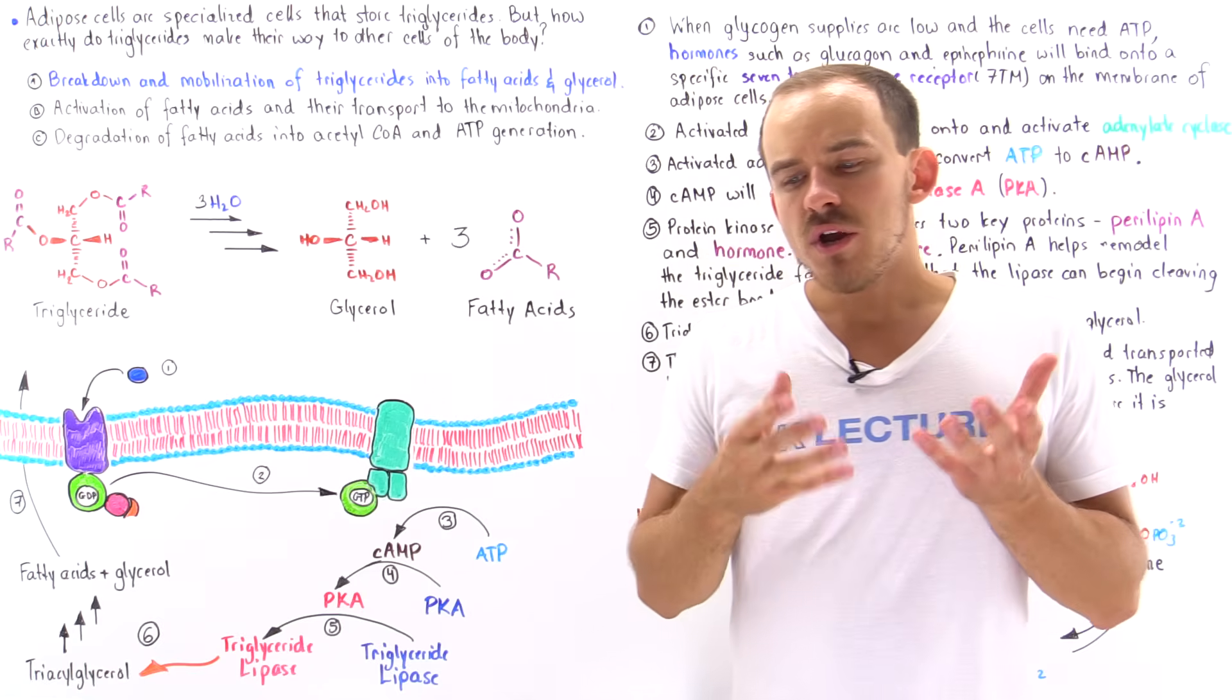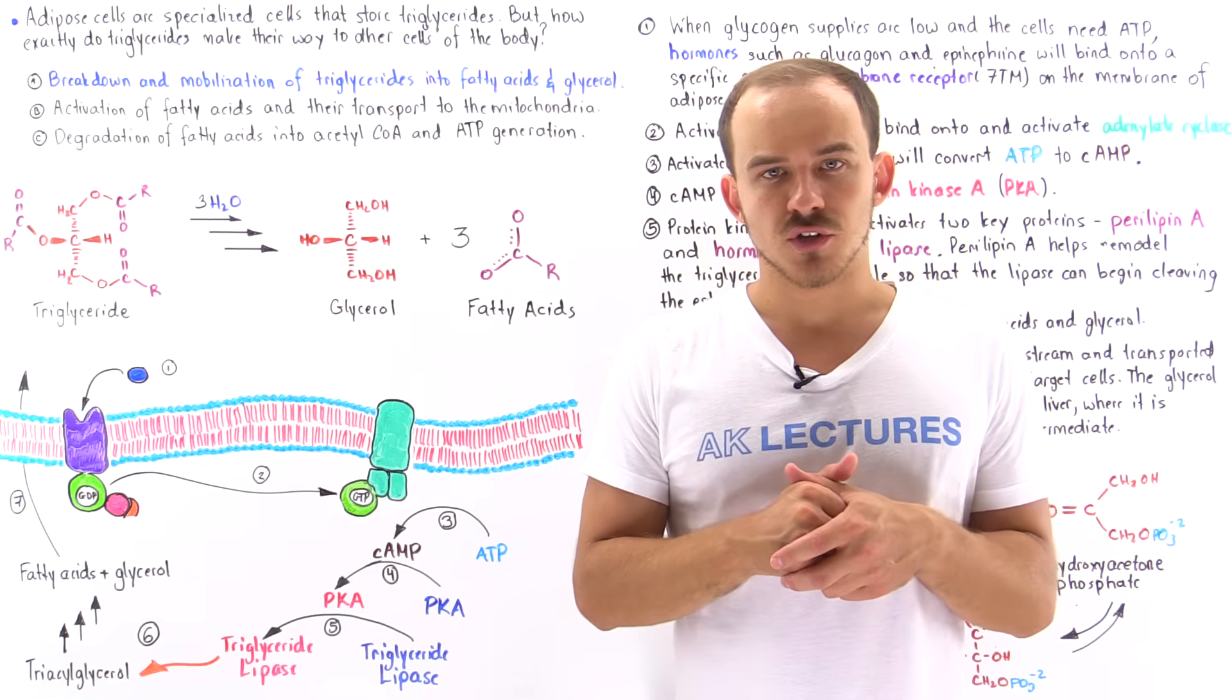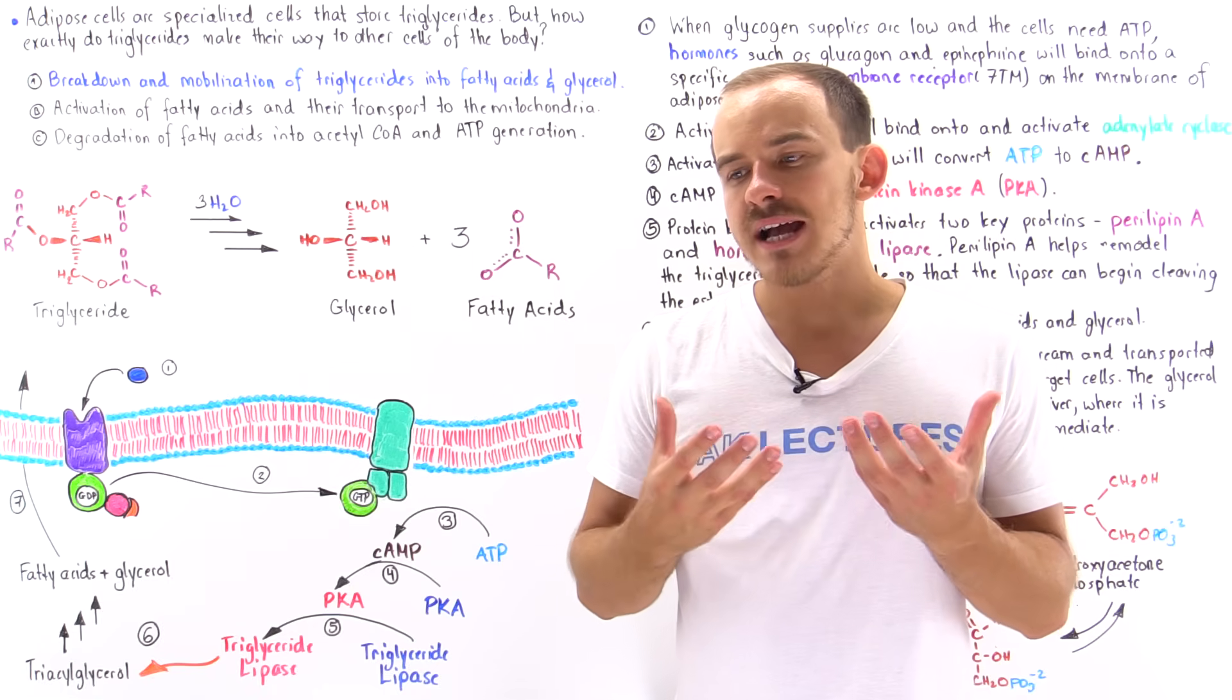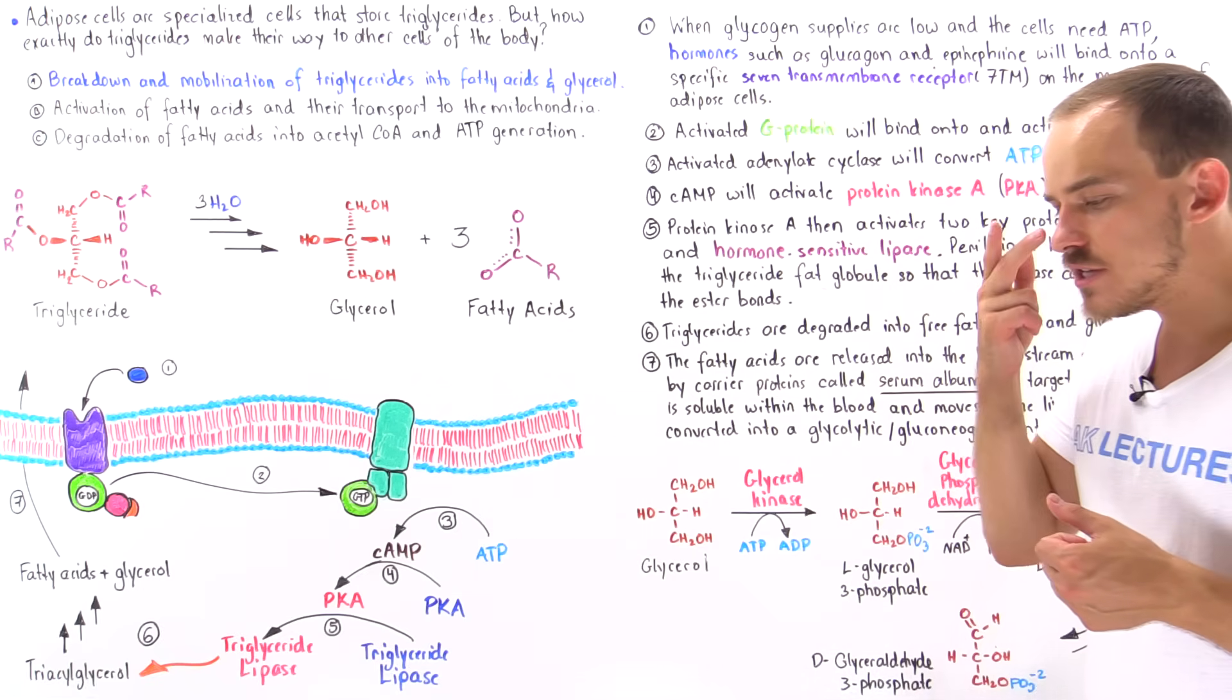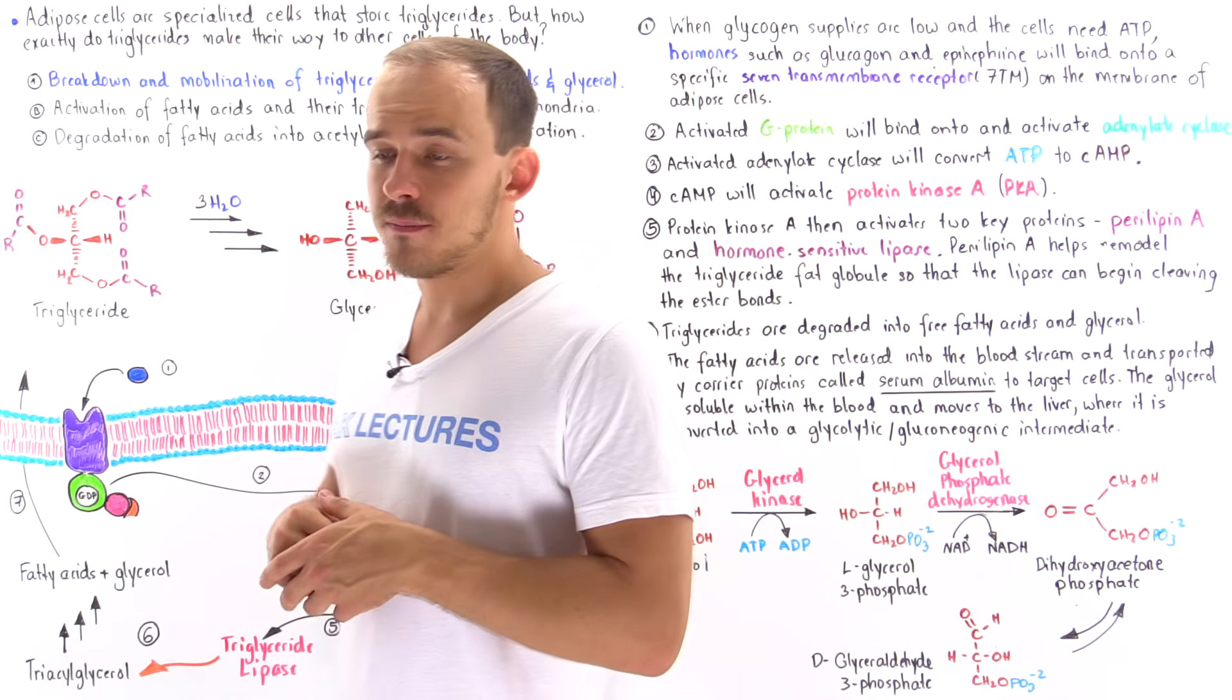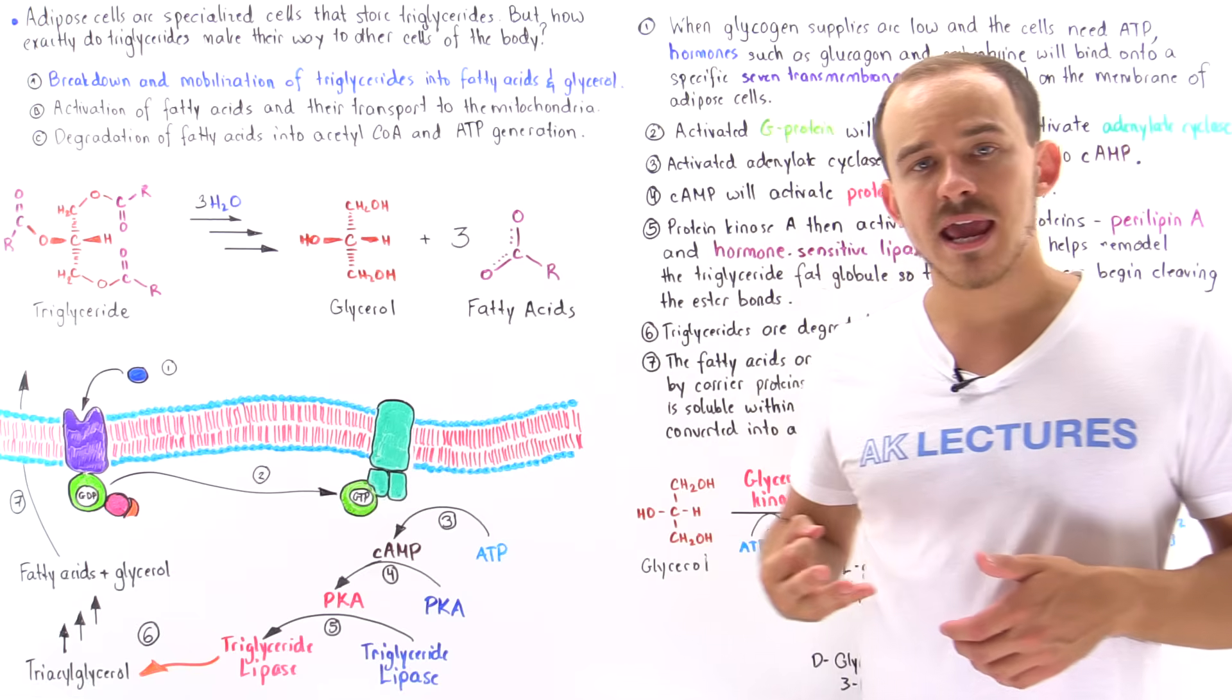Now we know the cells of our body can actually use these triglyceride molecules to help generate ATP molecules. But how exactly does this process take place? As we'll see in just a moment, the utilization of these triglycerides to help us generate high energy ATP molecules involves three different steps, three different stages.